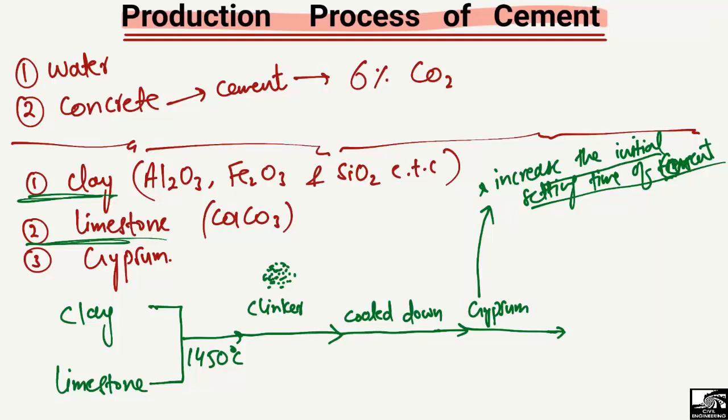After the addition of gypsum to the cooled clinker, the material is then ground. By grinding, the combination of gypsum and clinker is put into a machine and broken down into very small particles, depending on the required cement particle size. Finally, we have cement.